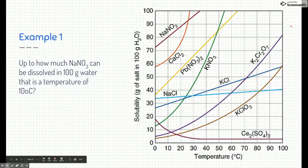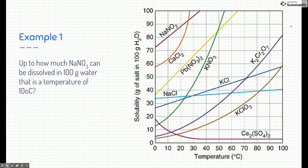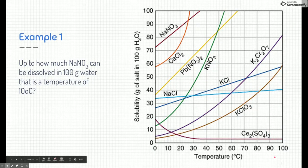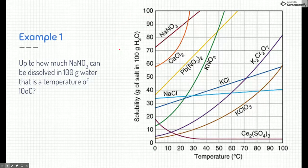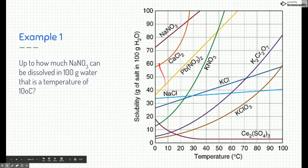So how exactly do we use this graph? Let's take a look at an example problem. Example number one, how much sodium nitrate can be dissolved in 100 grams of water? Remember, this whole graph represents 100 grams of water. And we're going to look for sodium nitrate. That's up here at the top left-hand corner. It's this red line right here, and it says how much can we dissolve at 10 degrees Celsius? So I'm going to find 10 degrees Celsius. I'm going to follow it up to that line, and that's my point right there.